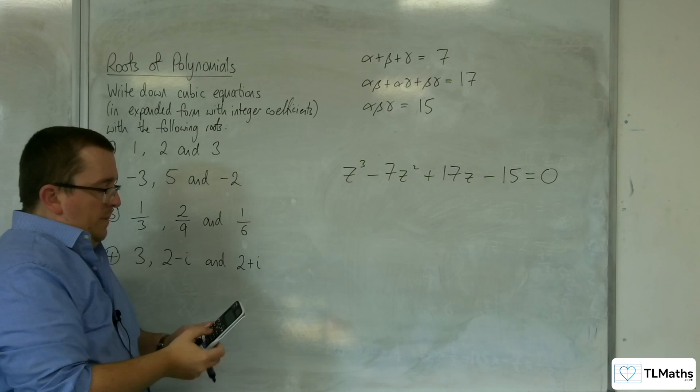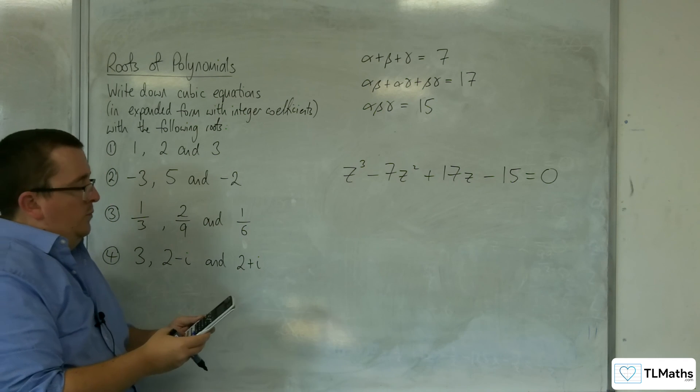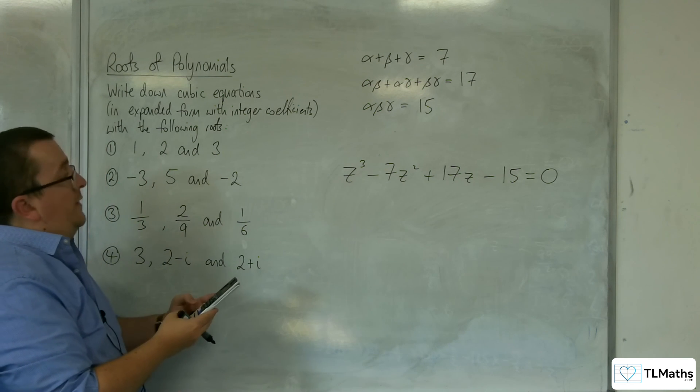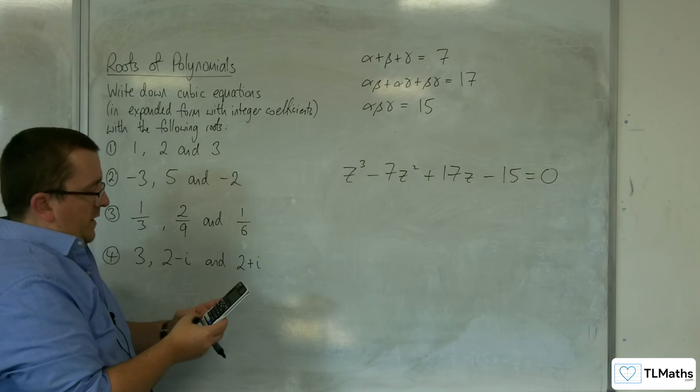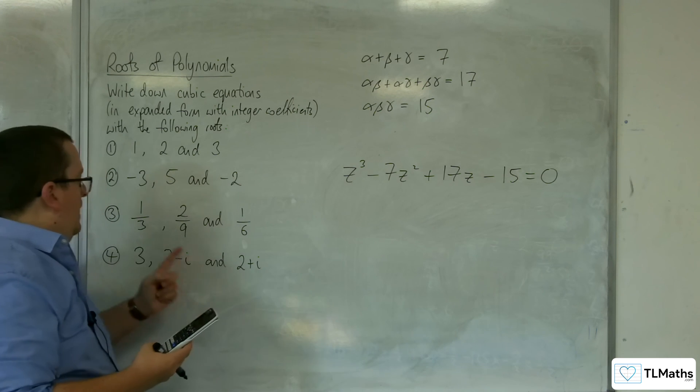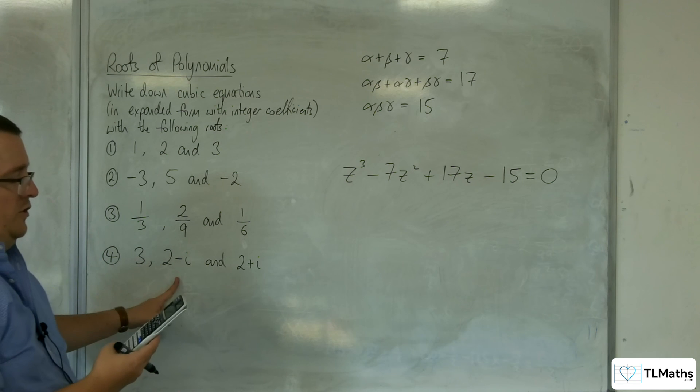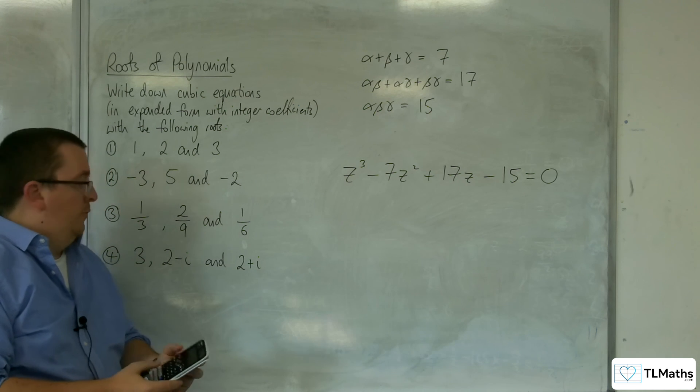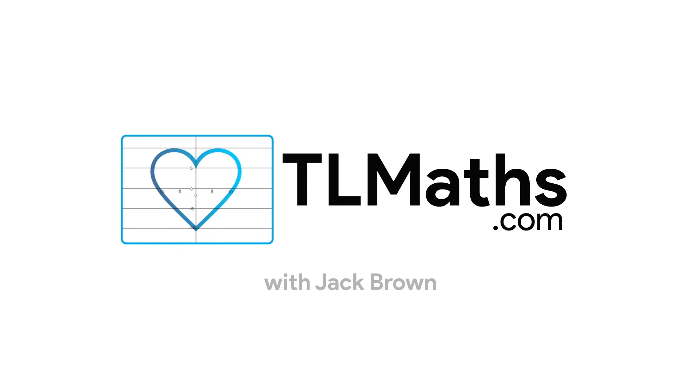Right, go into the cubic solver to check that that's all OK. So, we've got 1, minus 7, 17, and minus 15. And we get the 3, 2 plus i, and 2 minus i. And so, that confirms that the fourth one is correct. Thank you.